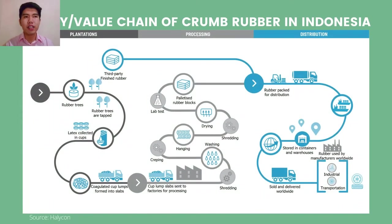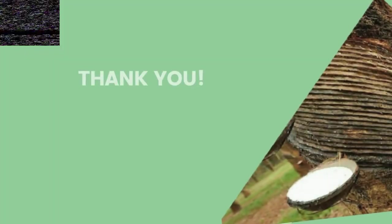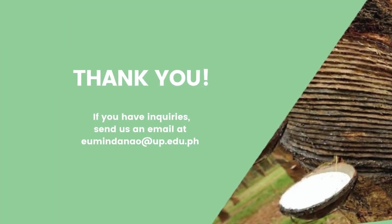The natural rubber supply chain figures were developed and practiced by Halcyon Agricultural Corporation, the world's leading rubber franchise with an integrated global network spanning plantations, processing, and distribution of quality rubber. In addition to the identified problems of the Philippine rubber industry, the country will be able to compete with neighboring Asian countries in producing and exporting the commodity. That marks the end of our rubber commodity system analysis. Thank you all for listening. For inquiries, send us an email at eumindanao@up.edu.ph.